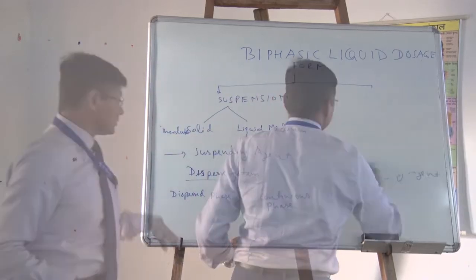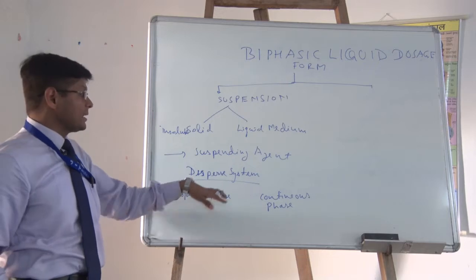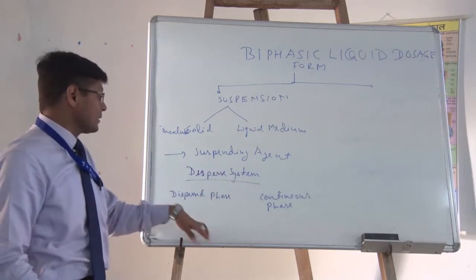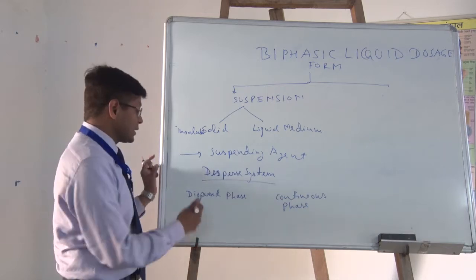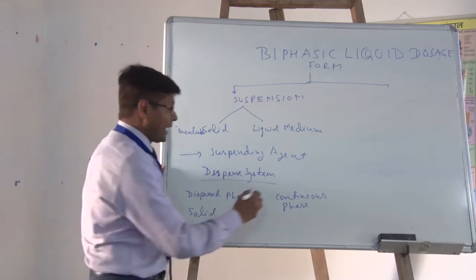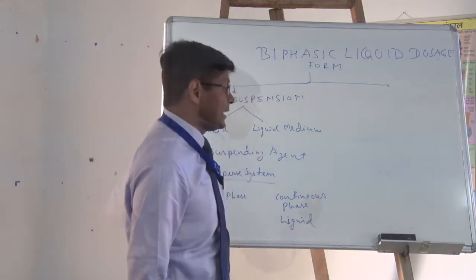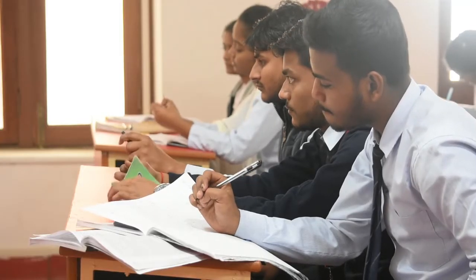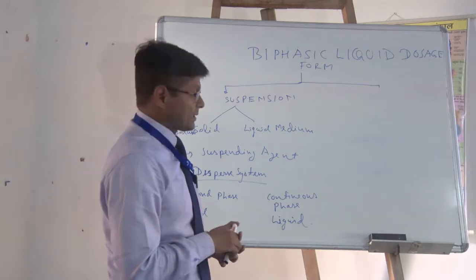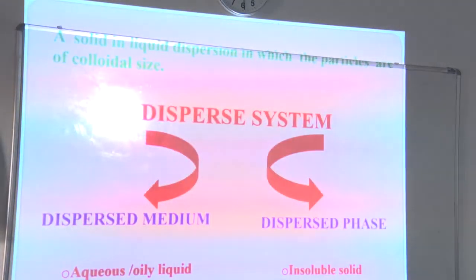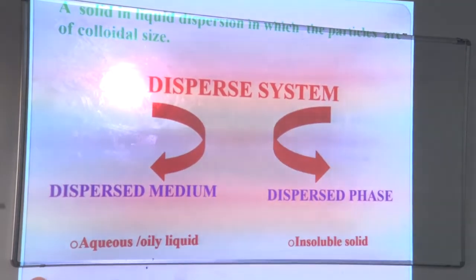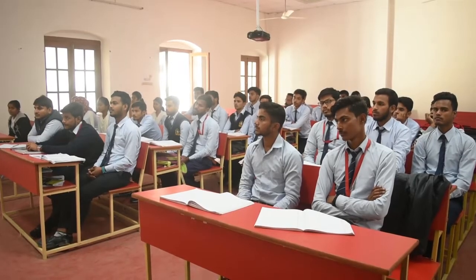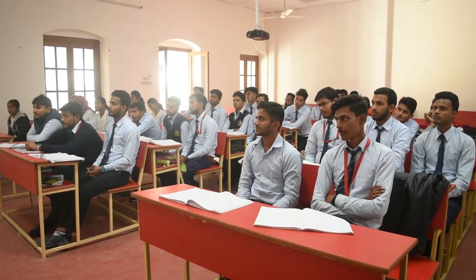In the case of suspension, this is a disperse system with two phases — biphasic means two phases. One phase is the disperse phase, another phase is the continuous phase. The disperse phase is the solid and the continuous phase is the liquid, and each phase exists in solid, liquid, or gaseous state. These are heterogeneous systems consisting of two phases. The dispersion medium is the aqueous or oily liquid, and the disperse phase is the insoluble solid.